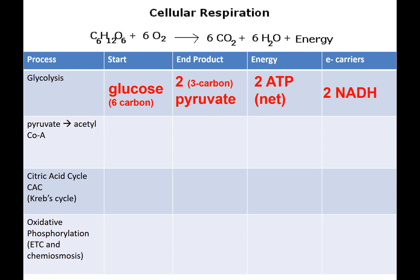To summarize glycolysis: you start with glucose, you produce two pyruvate molecules, you produce a net of two ATP, and you produce two NADH electron carriers.